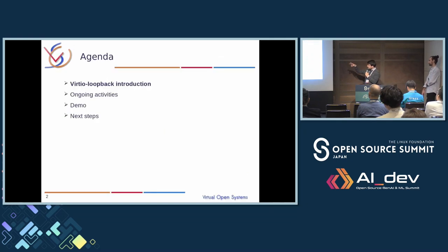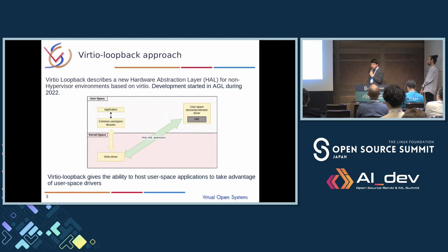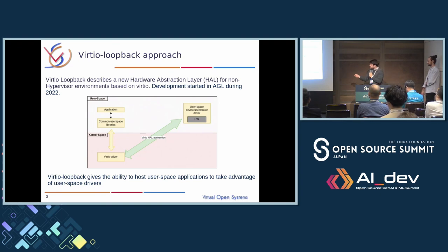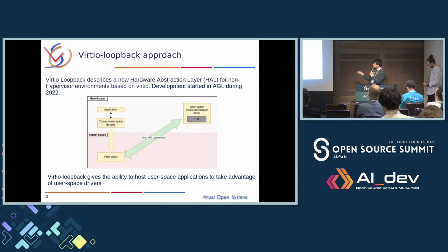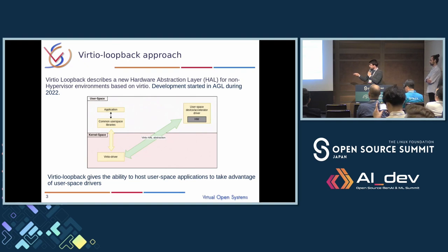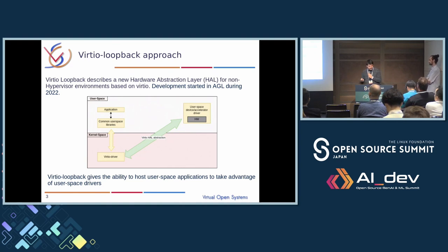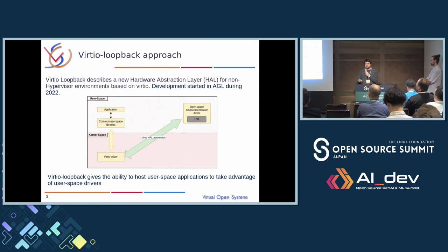So this is the agenda. A few words about the approach for those who don't know it yet. VirtIO Loopback is an abstraction layer that gives you the possibility to run and use VirtIO drivers in a non-virtualized device. This is not a virtual machine — this is a system like your PC, Raspberry Pi, or NarCar, any type of platform that could be automotive-related or not. The idea is to create an abstraction layer that allows applications to use VirtIO also where VirtIO is not generally available, because in theory VirtIO is built for virtual machines and can be used only inside virtual machines.